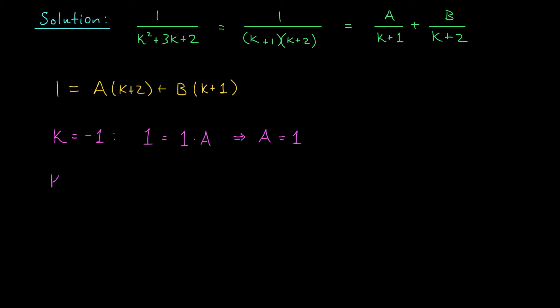Similarly, we can plug in k equals minus 2. That will kill off this first factor, k plus 2, and give us a value of minus 1 for our second factor. We have that 1 is equal to minus 1 times b, or equivalently, b is equal to minus 1. So there you go, we have our partial fraction decomposition. 1 over k squared plus 3k plus 2 should be equal to 1 over k plus 1 minus 1 over k plus 2.